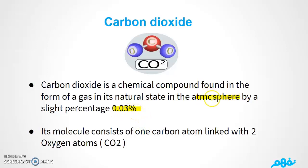When we talk about carbon dioxide, we should know that its molecule consists of one carbon atom — the C here — linked with two oxygen atoms, O2. That is why we call it carbon dioxide: CO2. We have one carbon atom and two oxygen atoms.